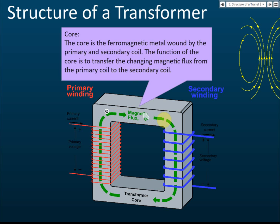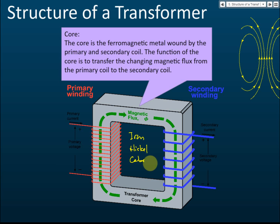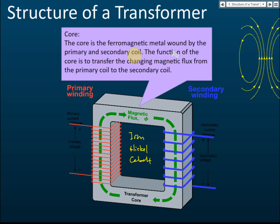The core is made of ferromagnetic metal. A ferromagnetic material is one that can be attracted by a magnet. You must use a ferromagnetic material for the core — if asked which material can be used, choose ferromagnetic materials such as iron, nickel, or cobalt. Iron or steel, which is an alloy of iron, are common choices. We typically use iron because nickel and cobalt are expensive and are not the best ferromagnetic materials.